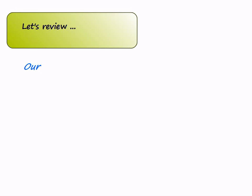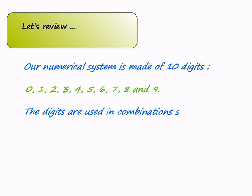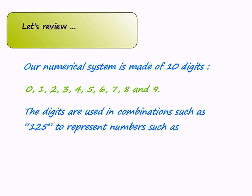Let's review. Our numerical system is made of 10 digits: 0, 1, 2, 3, 4, 5, 6, 7, 8, and finally 9. The digits are used in combinations such as 1, 2, 5 to represent numbers such as the number 125.